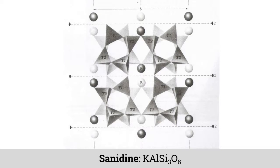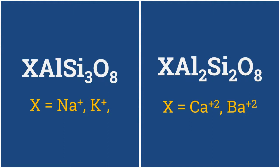Here, potassium ions are located in the voids present in the structure of Sanidine feldspar. When only one silicon atom is replaced by aluminium in a Feldspar formula unit, the formula becomes XAlSi3O8 and the structure is neutralized by monovalent cations, usually sodium and potassium.